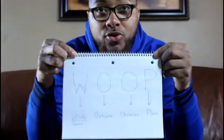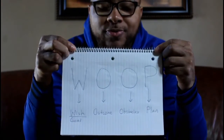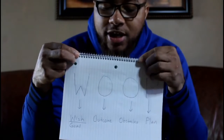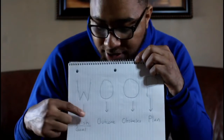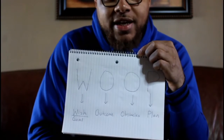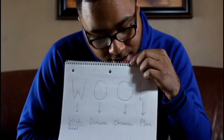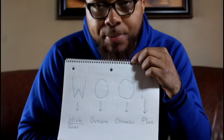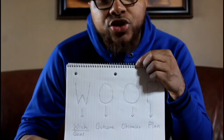So the first thing we're going to do is the WHOOP activity. WHOOP as in W-O-O-P. The W stands for wish — like you make a wish or you set a goal. The first O is for outcome, the second O is for obstacles, and the P is for plan.